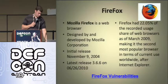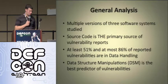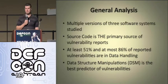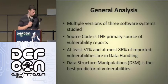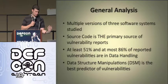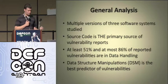For Firefox, we did a general analysis across multiple versions — the Army was a lot more interested in Firefox. We found that at least 51% and at most 86% of reported vulnerabilities were in data handling. So data structure manipulation was the best predictor of vulnerabilities in Firefox.